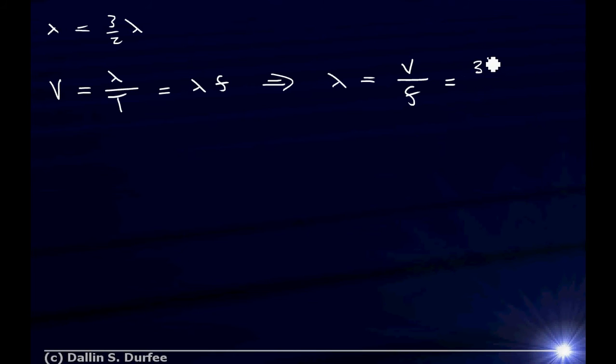wavelength is the speed of sound divided by the frequency. Now, I didn't give the speed of sound, so we'll assume it's 343 meters per second. And we divide that by the frequency, which was 200 hertz. And, of course, hertz are inverse seconds.